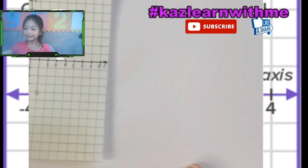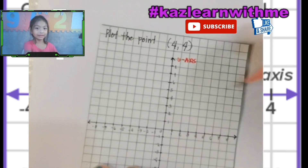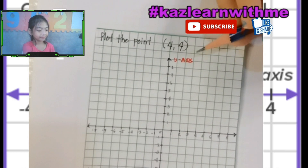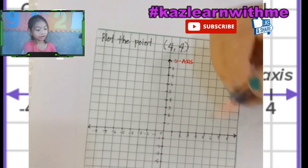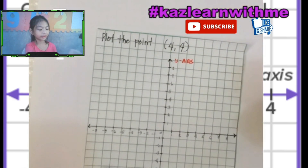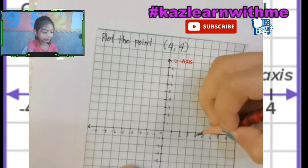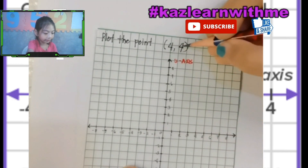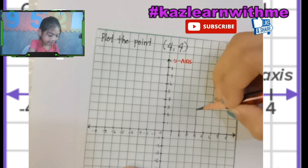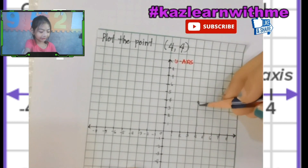Okay, it's four and four. Remember, the first number is always X and the second number is always Y. So four is at X — here's the four — and then another four: one, two, three, and four. Here's the fourth right over here.